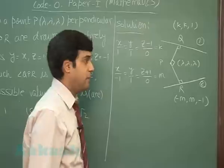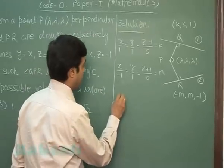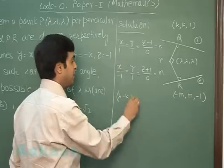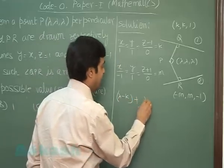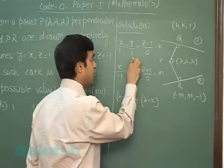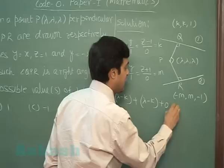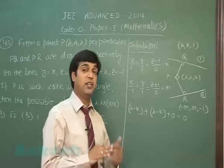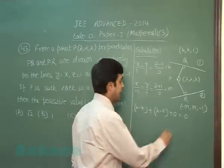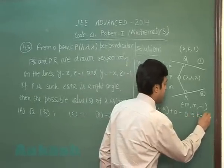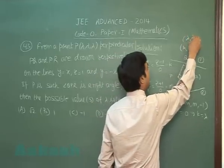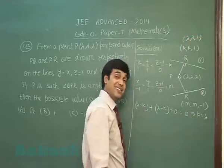PQ is perpendicular to line 1 means (λ - k) multiplied with 1 plus (λ - k) multiplied with 1 plus 0 equals 0. Using the fact a₁a₂ + b₁b₂ + c₁c₂ = 0, giving me k = λ. So point Q changes to (λ, λ, 1). This is clear.